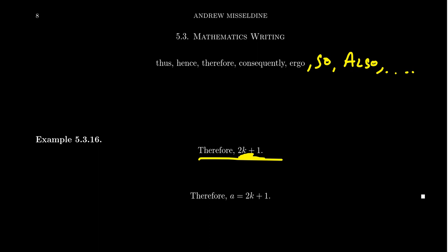But the thing is, the issue here is that this isn't a statement. 2k plus 1 is just a mathematical expression. We can assume there's things that provide this, but whenever you have a therefore or hence, it needs to be followed by a statement.